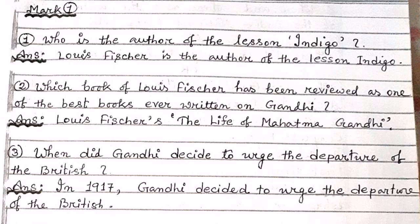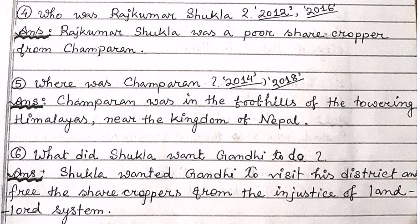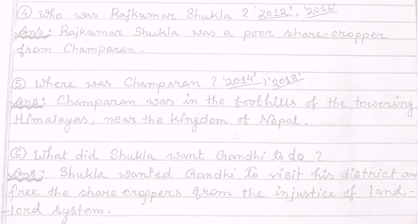In 1917, Gandhi decided to urge the departure of the British. Who was Raj Kumar Shukla? This question came in the years 2012 and 2016. Raj Kumar Shukla was a poor sharecropper from Champaran. Where was Champaran? This question came in 2014 and 2018. Champaran was in the foothills of the Himalayas near the kingdom of Nepal. What did Shukla want Gandhi to do? Shukla wanted Gandhi to visit his district and free the sharecroppers from the injustice of the landlord system.